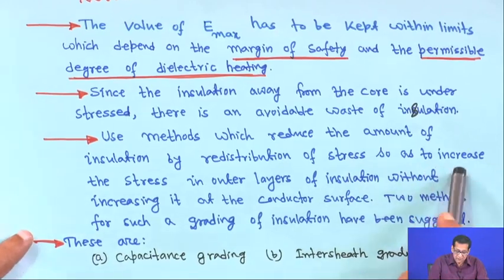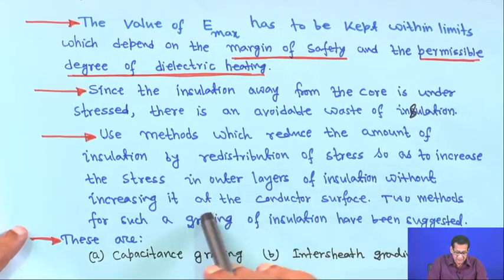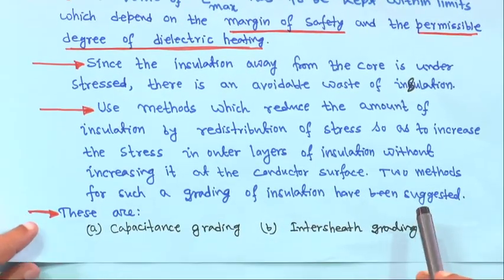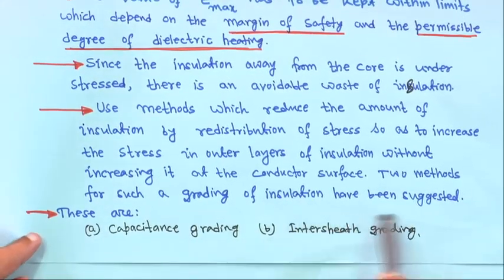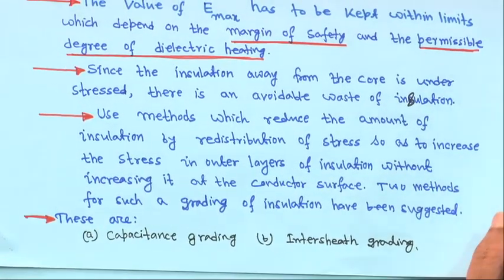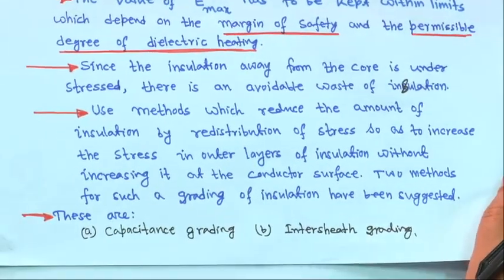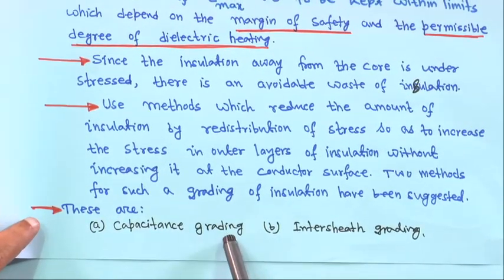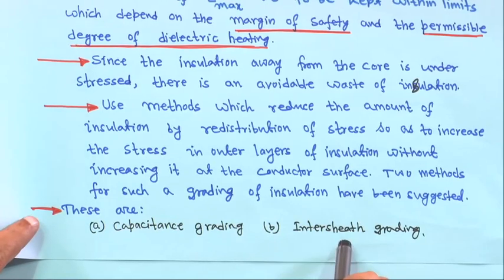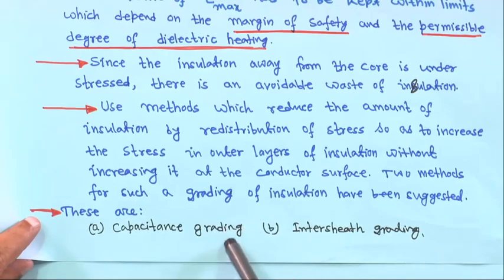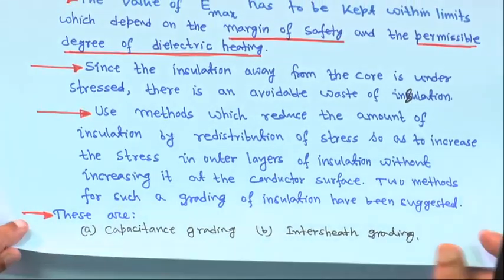By redistribution of stress, we increase the stress in outer layers of insulation without increasing it at the conductor surface. Two methods are generally recommended: capacitance grading and intercept grading. In reality, implementation of both is difficult, so they are rarely used, but we will see how things can be done.